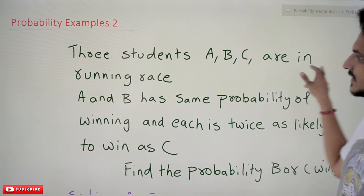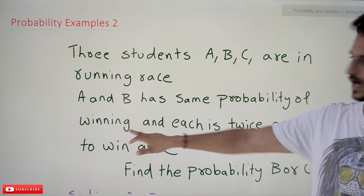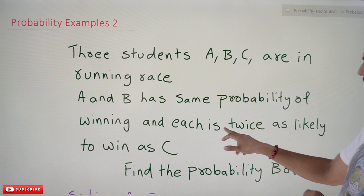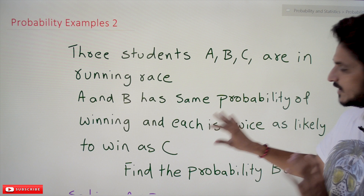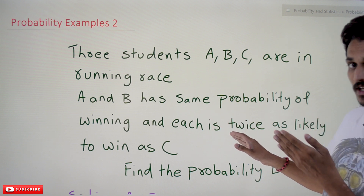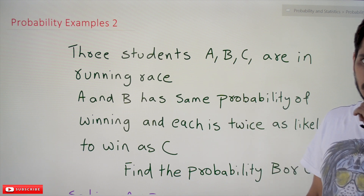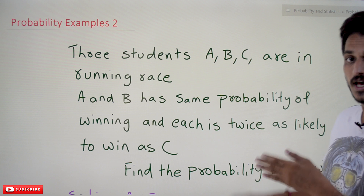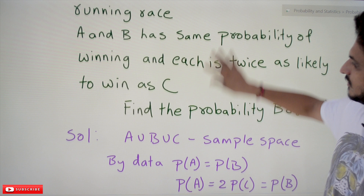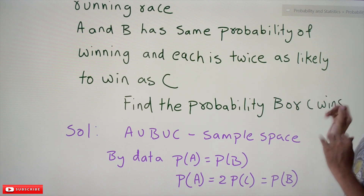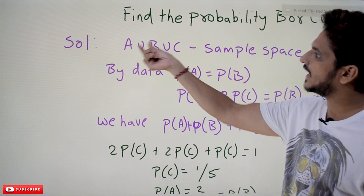Coming to today's class, the first example: three students A, B, C are in a running race. A and B have the same probability of winning, and each of A and B is twice as likely to win as C — meaning the probability that A wins is twice the probability of C, and similarly the probability that B wins is twice the probability of C. Find the probability that B or C wins.